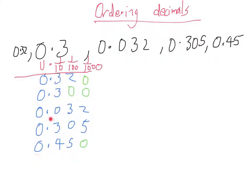Now because these are all the same, these are all zero, I can imagine that these numbers are in fact 320, 300, 32, 305 and 450. And I need to put those in order.